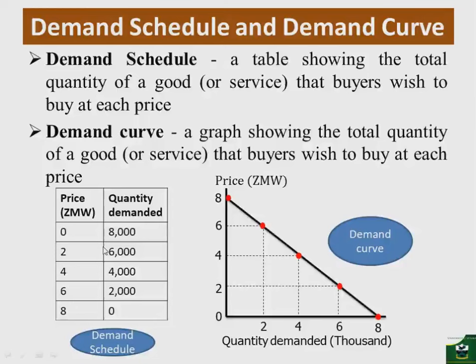The demand curve for a product shows that there is an inverse relationship between the price of a commodity and the quantity demanded of it — the higher the price, the lower the quantity demanded, as postulated by the law of demand.